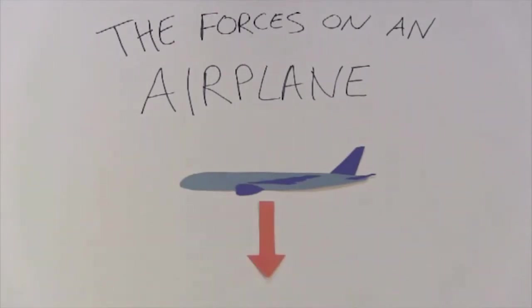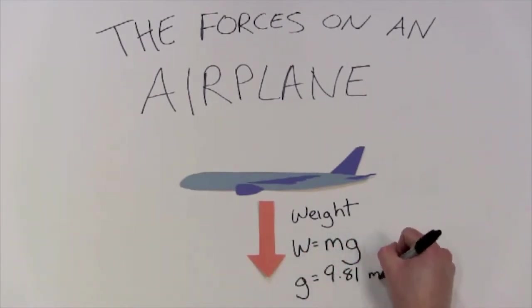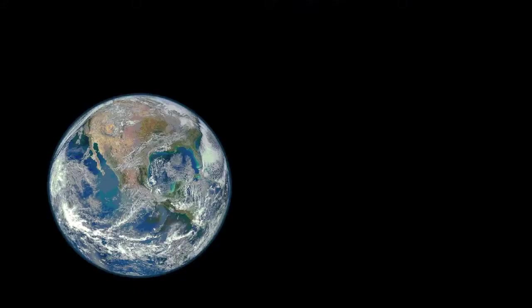The first force acts on all these vehicles, really it acts on everything. It's the weight force which points down towards the center of Earth. Weight is equal to the mass of the airplane m, right here, times the acceleration due to gravity. Here on Earth, g is equal to 9.81 meters per second squared. Now that's only for Earth. The acceleration due to gravity really depends on the mass of the planet that you're on.